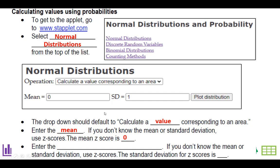And enter the mean, which is zero if you're doing z-scores. But if you do know the mean, you can just put it straight in there. It does default to the mean and standard deviation for z-scores.